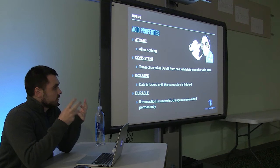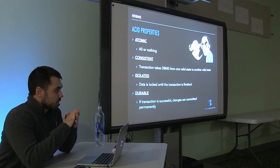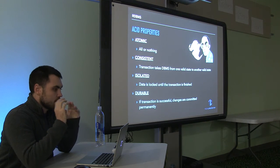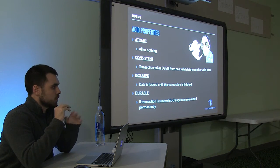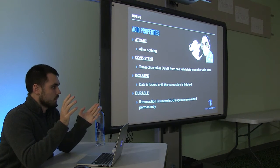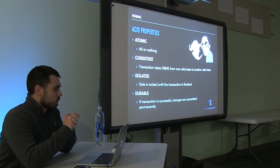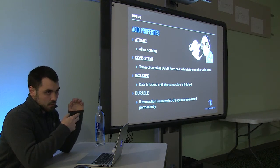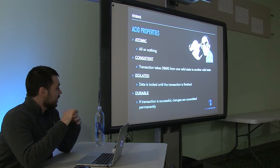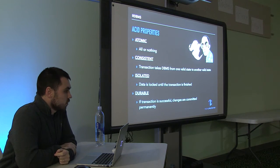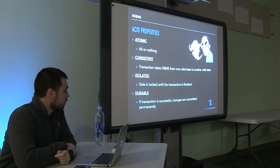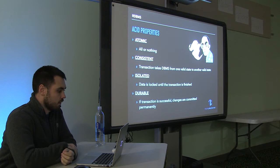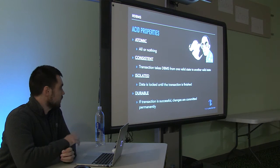The reason relational databases were developed was because we really wanted consistency with data. If we had a transaction, we wanted to make sure that it was permanent. So relational databases follow ACID properties. ACID means atomic, consistent, isolated, and durable. Atomic is all or nothing — when you do a transaction against the relational database, if any part of that query fails, the entire thing is rolled back. There are no partial successes.